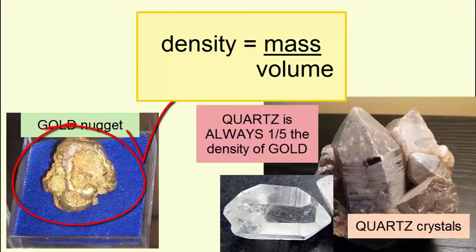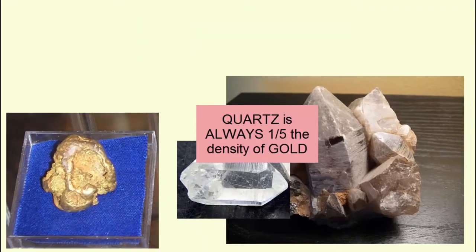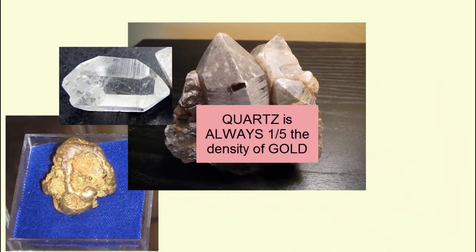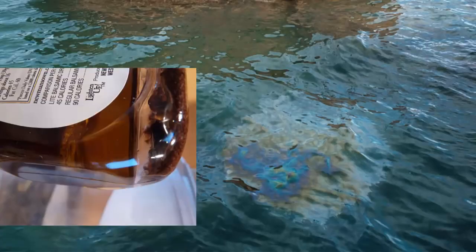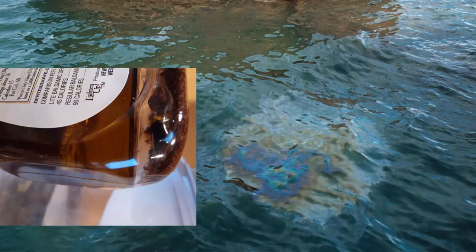Quartz is always one-fifth the density of gold, and if both were molten and floating in a bucket together, the quartz would rise to the top and the gold sink to the bottom. We see this really clearly when we mix oil and water. The denser water sinks under the less dense oil.